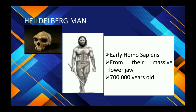Next is Heidelberg Man, an early Homo sapien known from their massive lower jaw, living 700,000 years ago. Cranial capacity was 1,300 cc. The jaw was large, heavy, and lacked a chin.